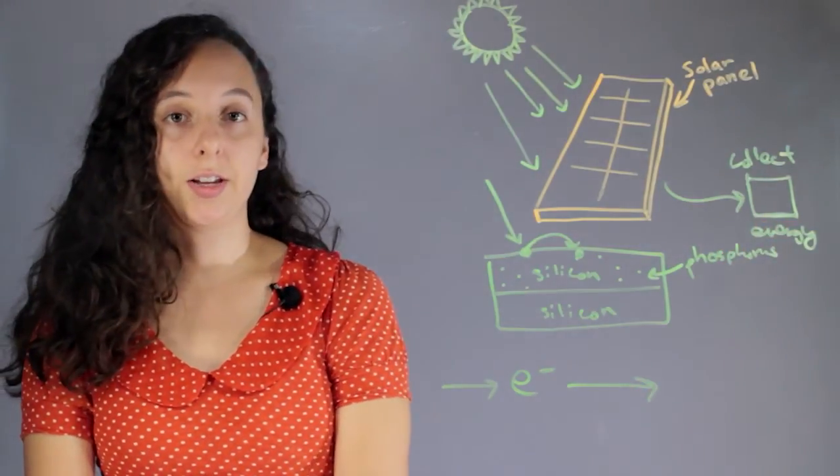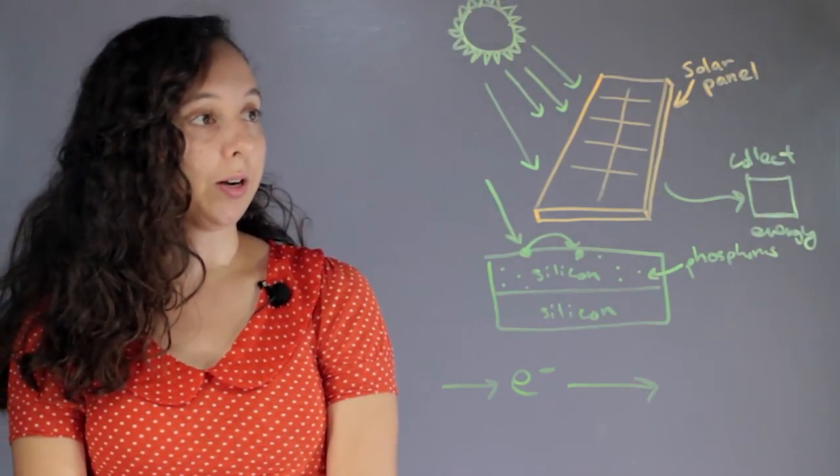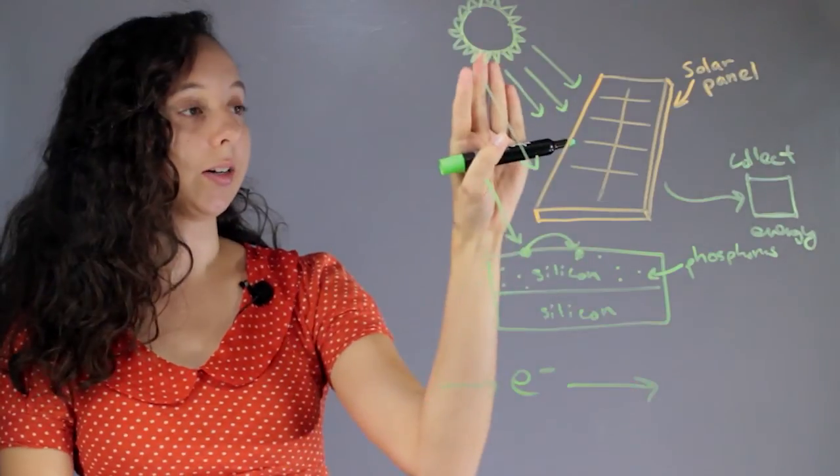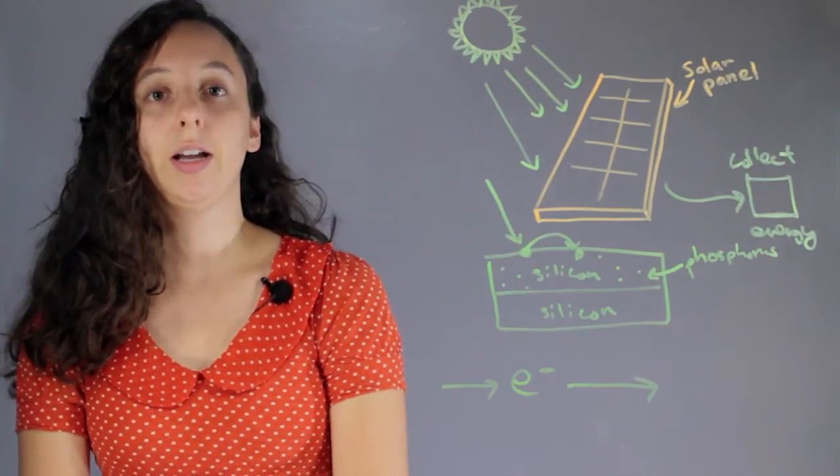And so this is a very quick and dirty way of explaining how solar panels work, basically. The sun comes in, heats up the electrons, electrons move, creating a current, and you've harnessed energy.